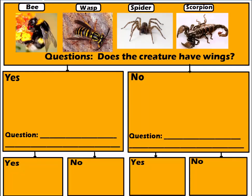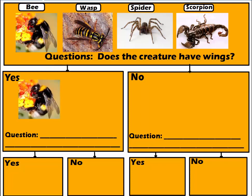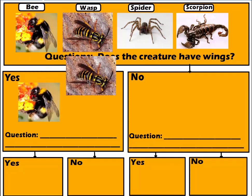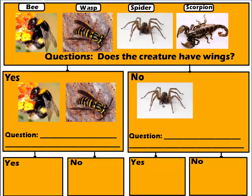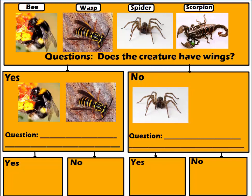Here we have a sorting chart with four organisms: a bee, a wasp, a spider, and a scorpion. We start with a kickoff question: does the creature have wings? We look at our specimens and sort them into a yes box or a no box. Wings are structures found on the backs of insects that allow them to fly. The bee and wasp clearly have wings, while the spider and scorpion do not, so those go in the no box.